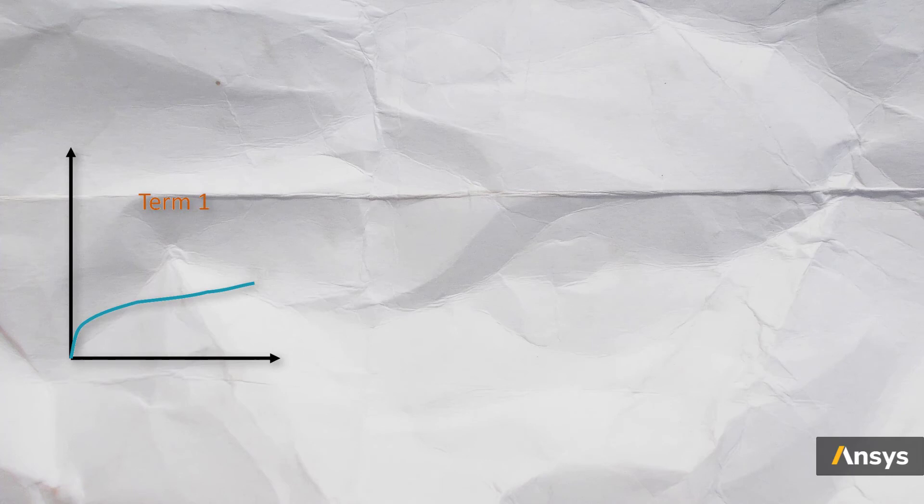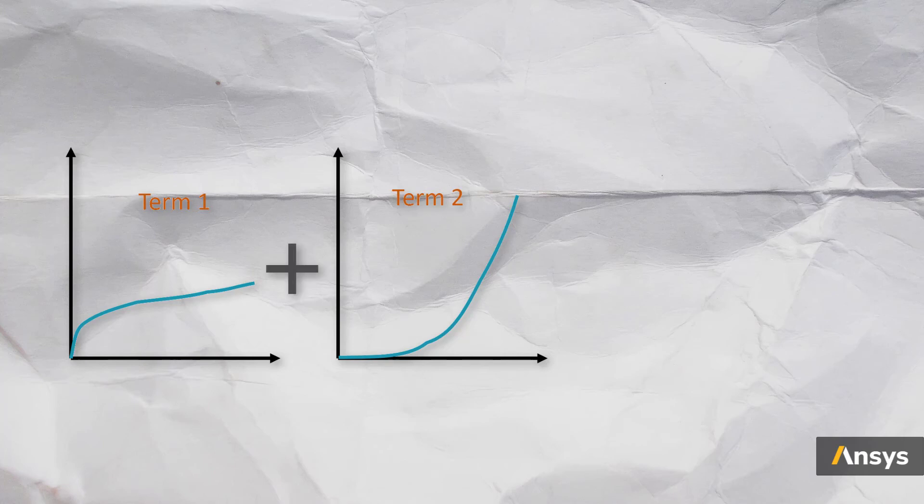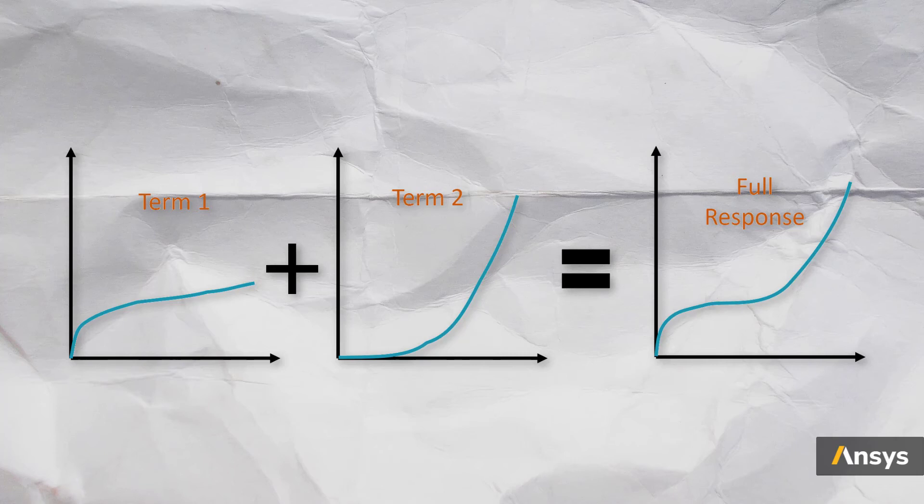Let's take this response as an example. Say the first term has a convex upward response, where the material starts with a stiff response and reduces at higher strains. And the second term has a concave upwards response, where the material stiffness increases with the strain. So the combination of these two terms will look like this. As one model is more dominating at the start, we can see that the material starts off with a stiffer response, then the stiffness reduces for a bit, followed by an increase again in the stiffness.